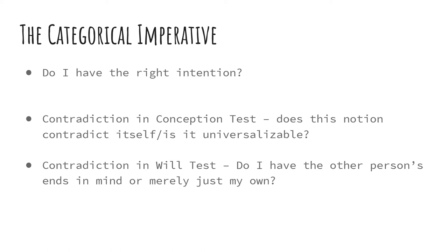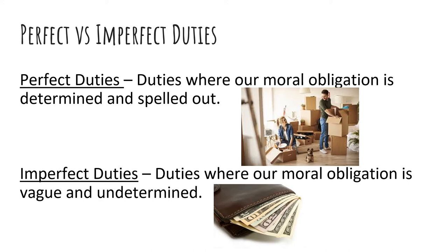This is where Kant introduces his fourth conception: perfect duties and imperfect duties. Perfect duties are duties where our moral obligation is completely determined — we know exactly what we're supposed to do. For example, when my parents asked me to help them move, I knew exactly what my duty was: pick up the heavy things and put them in a U-Haul. But the situation with the homeless person is an imperfect duty — we don't know how much of the hundred dollars we're actually supposed to give. It's vague and undetermined — that's what an imperfect duty is.